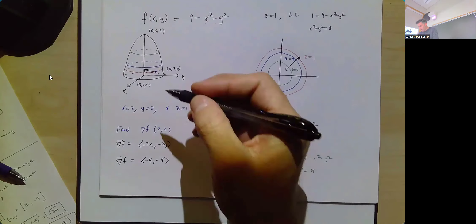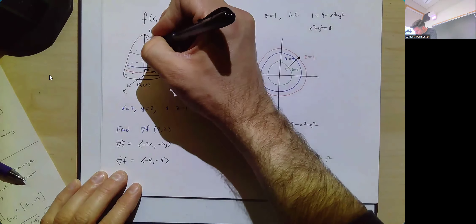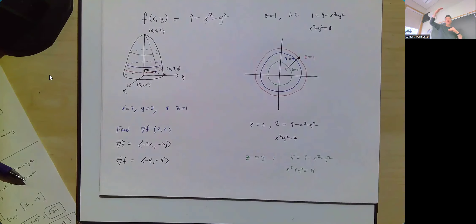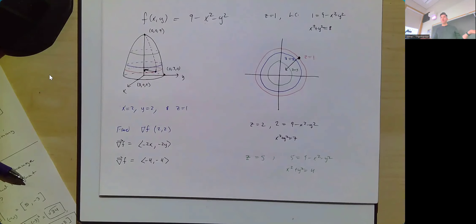If we travel in the direction of the gradient, we are forced to go up, crossing every level curve perpendicularly. That's what's special about the gradient relative to level curves. If you're trying to go up as fast as possible, the fastest way to cross all the level curves is by cutting through them perpendicularly — orthogonally, at a 90-degree angle. The gradient is always perpendicular to any level curve.